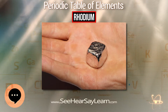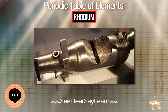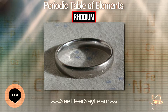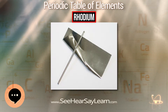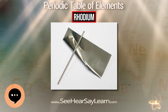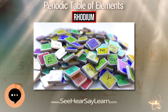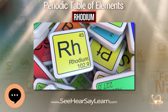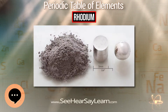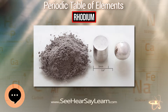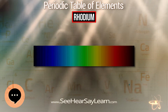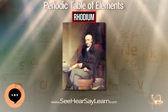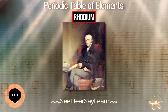Rhodium, meaning 'rose,' was discovered in 1803 by William Hyde Wollaston, soon after his discovery of palladium. He used crude platinum ore, presumably obtained from South America. His procedure involved dissolving the ore in aqua regia and neutralizing the acid with sodium hydroxide. He then precipitated the platinum as ammonium chloroplatinate by adding ammonium chloride. Most other metals like copper, lead, palladium, and rhodium were precipitated with zinc.